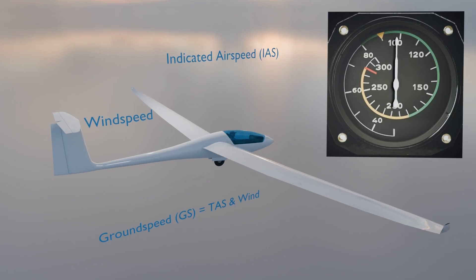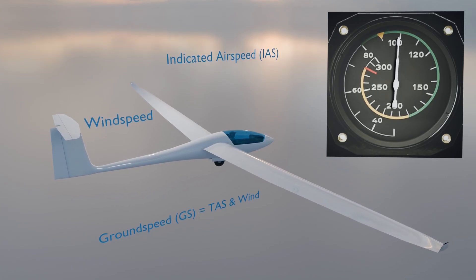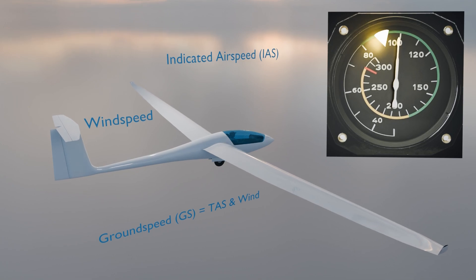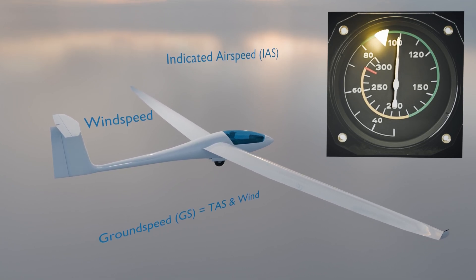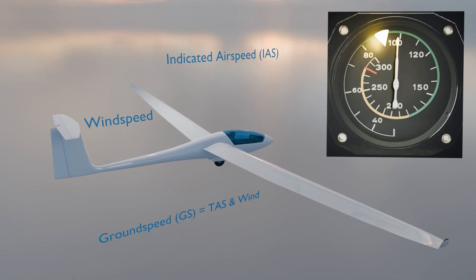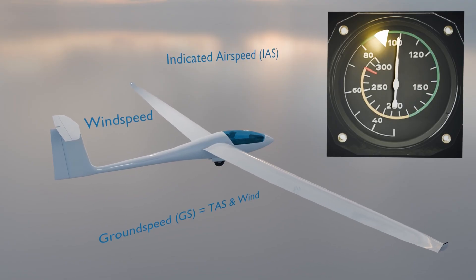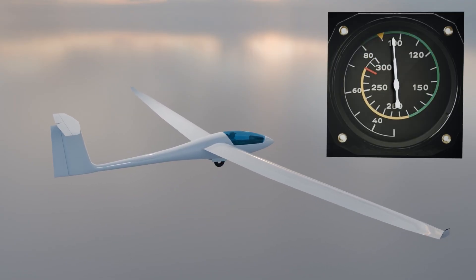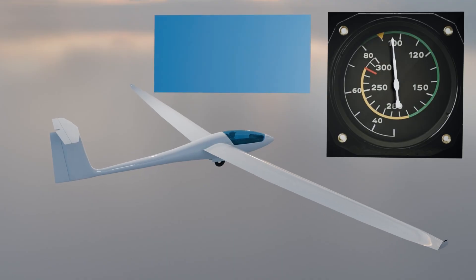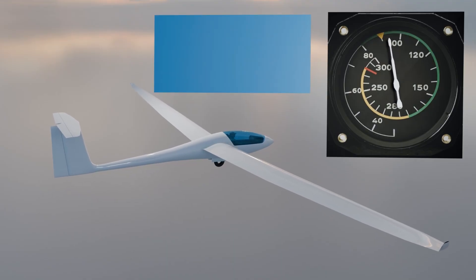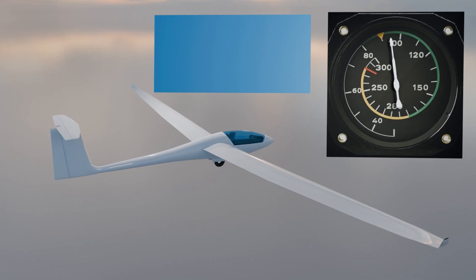At the lower end of the scale there's often a small yellow triangle. This indicates the minimum recommended approach speed for landing. But be careful — this also only applies in calm air. Your instructor will explain why a higher speed is often used in real-world conditions.